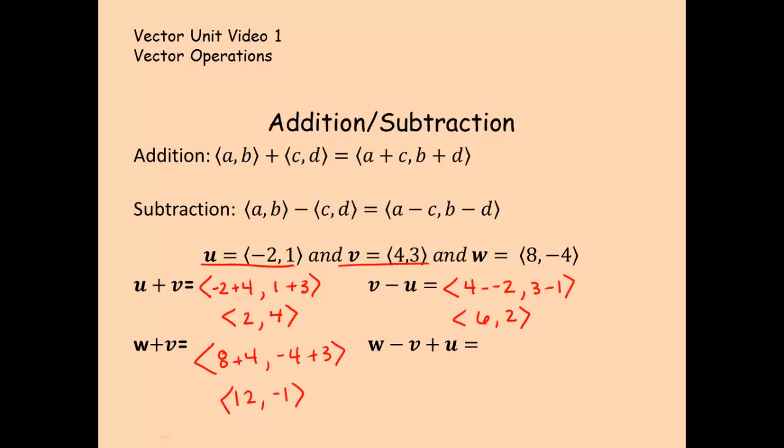And then if I look here with w minus v plus u, we can actually do that all in one string if we'd like. So it is eight minus four plus negative two, comma, negative four minus three because I'm subtracting v and then adding one. And then we'll simplify that. So eight minus four plus negative two is two. And negative four minus three plus one is negative six. So there was some simple practice with addition and subtraction.